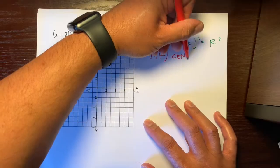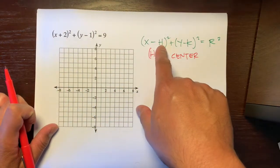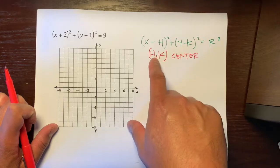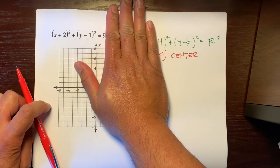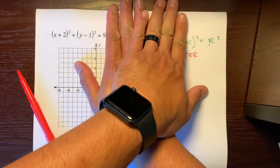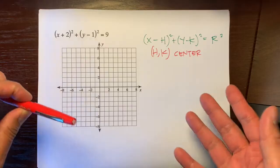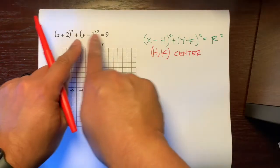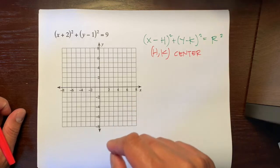This is important because the center isn't negative H, the center isn't negative K, it's just H and K. If we just cover that, that would be the X value of the center, and K would be the Y value of the center. Let's look at this first example. Let's figure out what the center is.